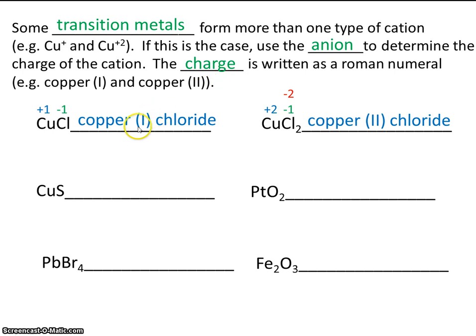The Roman numeral here, like one and two, does not tell us how many coppers there are. It tells us the charge on copper. That's very important. And once again, how do you know when you have to report if an atom has a charge or not? Well, if it's a transition metal, then you have to say what the charge is. How do you figure out the charge? You're going to use the anion. So let's follow these steps.